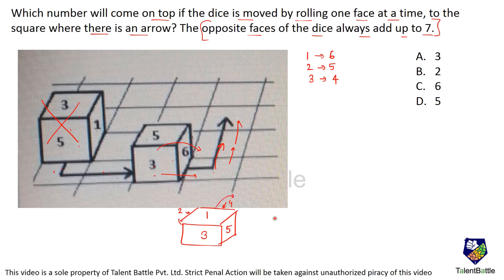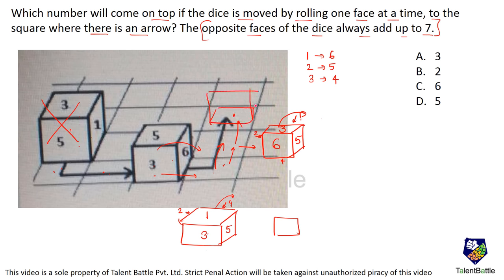After that roll, 4 is at the bottom so 3 is at the top. On the right-hand side of 3 is 5, and opposite to 5 is 2. Six was at the bottom earlier, so 1 is on the other side. Rolling again so that 1 goes to the bottom — the top face becomes 6. Since 1 is at the bottom, its opposite — 6 — is on top. The answer is option C.